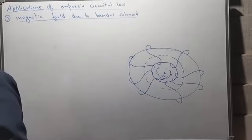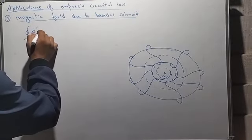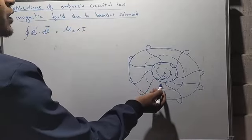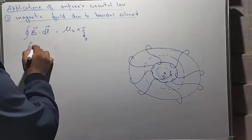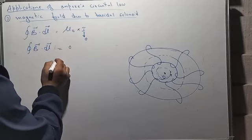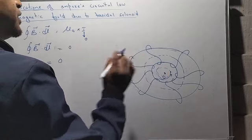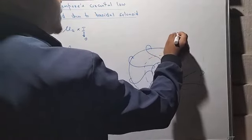Does this closed loop enclose any current? No. So when there is no current enclosed, from Ampere's Circuital Law we have B·dl = μ₀ times the current enclosed by the loop. Because the current enclosed at the interior point is zero, this line integral B·dl equals zero. Therefore the magnetic field at the interior of the toroid is zero.